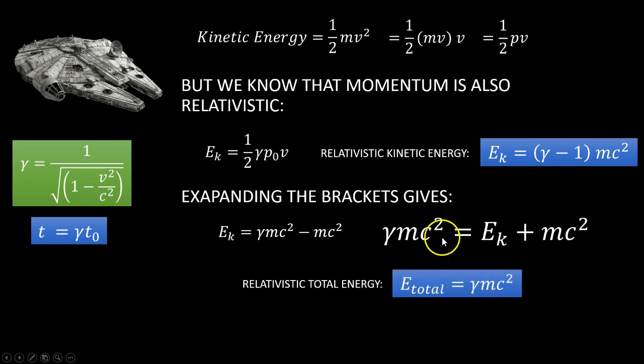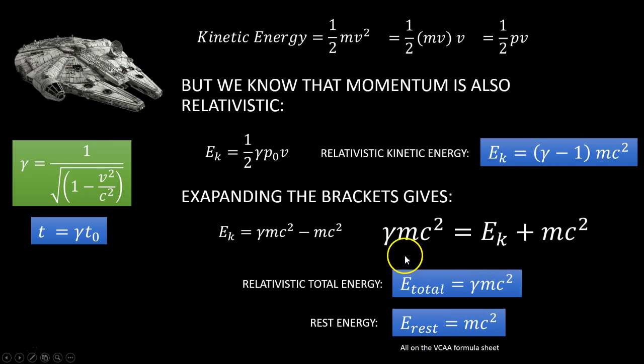Now, Einstein interpreted this equation as being this value here is the total energy of an object, which is equal to the kinetic energy plus the rest energy. So the relativistic total energy is this value, and the rest energy is this value, which you sometimes see written as m₀, the rest mass of an object multiplied by the speed of light. And that's saying that the energy involved in something, the total energy of an object, is equal to how, let's say a particle, is how fast it's moving plus its rest mass energy. That's saying that mass has energy. And E equals mc squared, you might have seen in other forms. These formulae are all on the VCE formula sheet, so you don't need to be able to recall them.